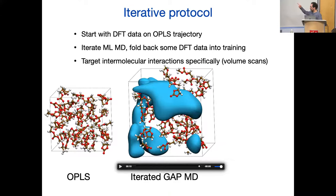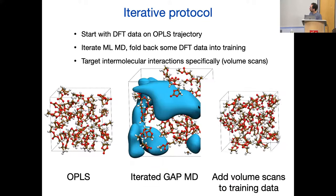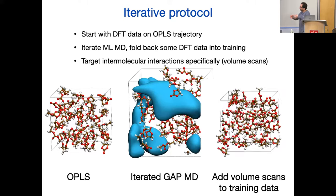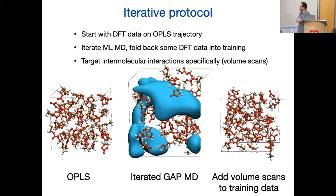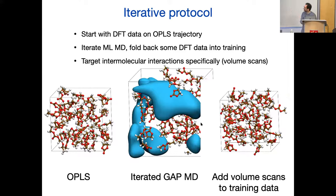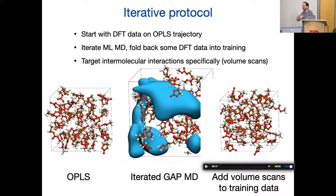We've since seen the same thing in every other project where we try to do this directly — it happens for water, it happens for sulfur, which is made of rings of eight sulfur molecules that weakly interact. We have ad hoc solutions: we stabilize by taking snapshots, expanding them uniformly, and putting that into the training set. It works in the sense that we don't get swelling anymore, but we have no idea why it works — there's no mathematical reason.